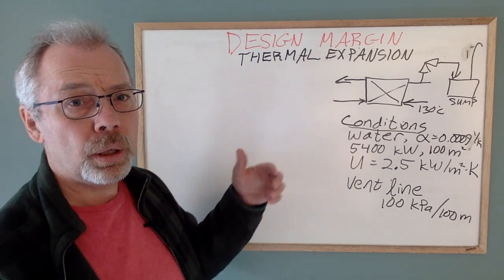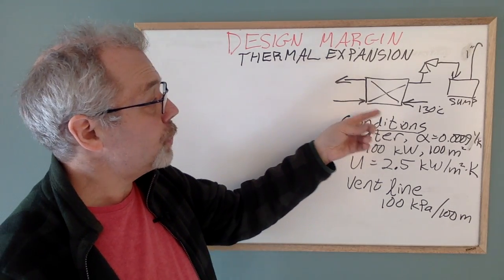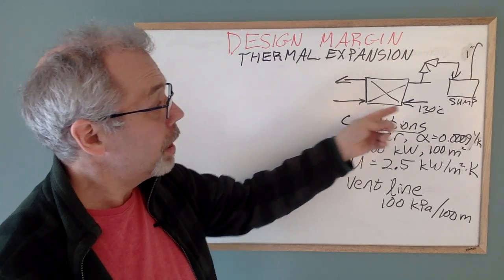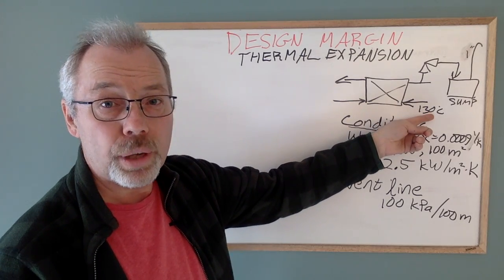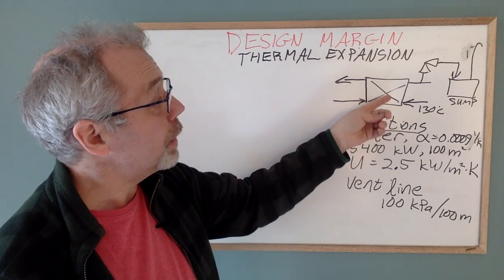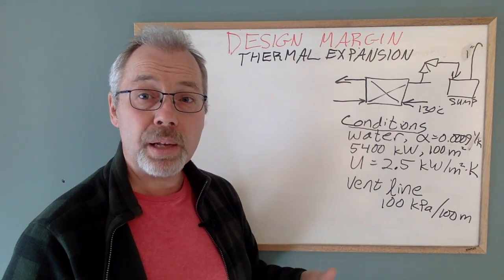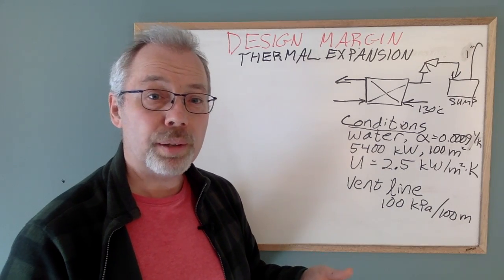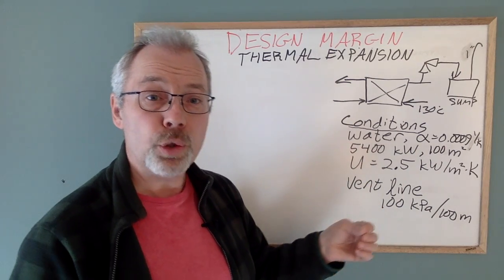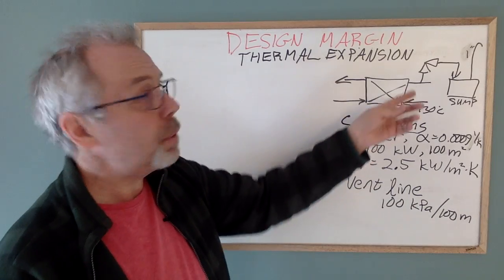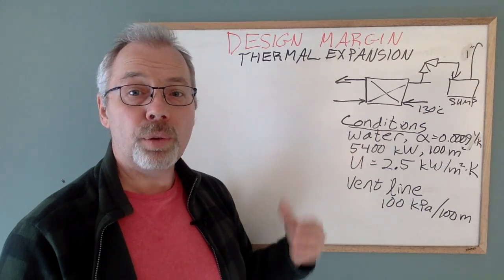Now, with our exchanger, we will imagine that the cold side is blocked in, and we start the hot side flow. The cold side warms up a little bit, the cold side fluid expands, and since the cold side is blocked in, we can rupture the exchanger. And that's why we put a small PSV on the cold side.